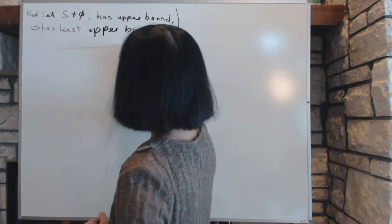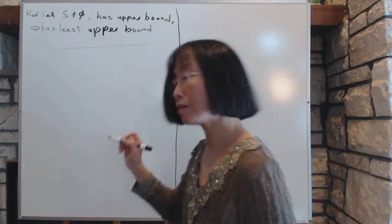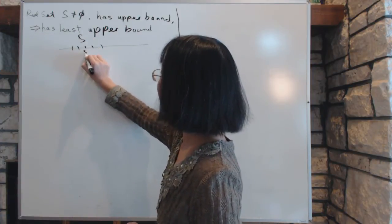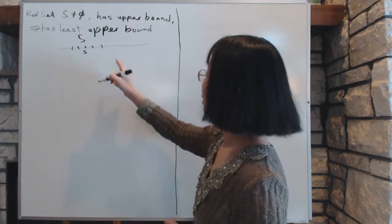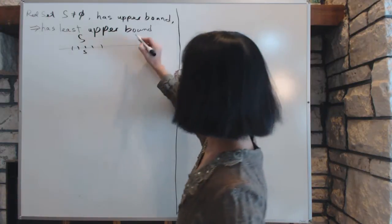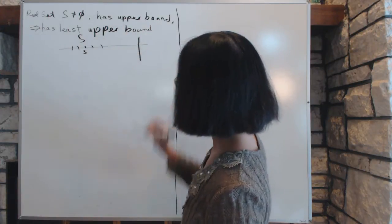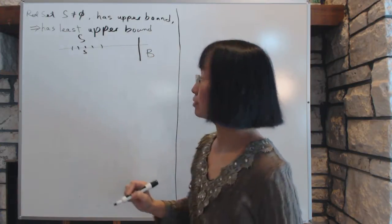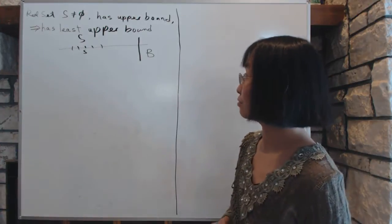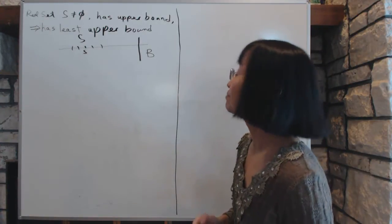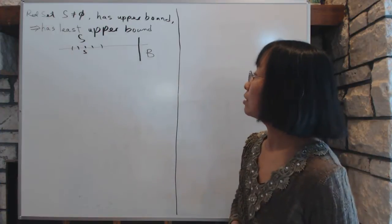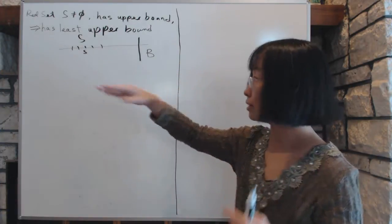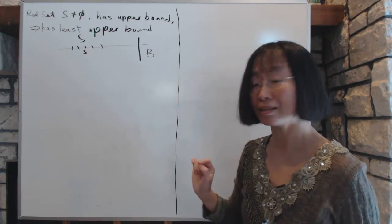We can see this concept very easily in a picture of the real number line. You have a bunch of stuff here — that's your set S, and elements in there are called little s. There's a bunch of numbers, and you are able to draw some kind of upper bound for it. Let's call it B. Upper bounds traditionally use capital letters, but it's just a number — a big number that's bigger than all the stuff inside your set.